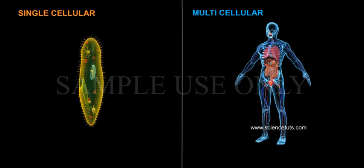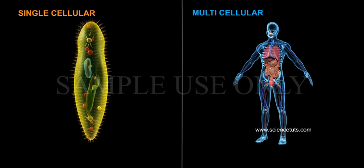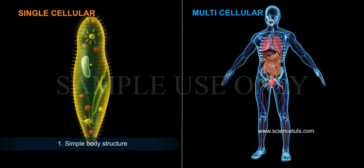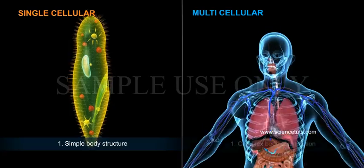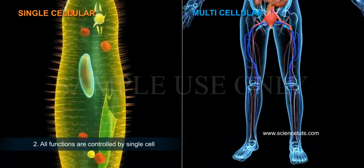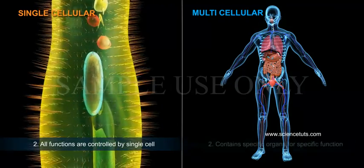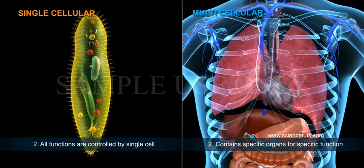The differences between single-cellular and multicellular organisms are shown in tabular form. 1. Single-cellular organisms have a simple body structure, whereas multicellular organisms have a complex body construction. 2. In single-cellular organisms, all functions are controlled by a single cell, whereas multicellular organisms contain specific organs for specific functions.